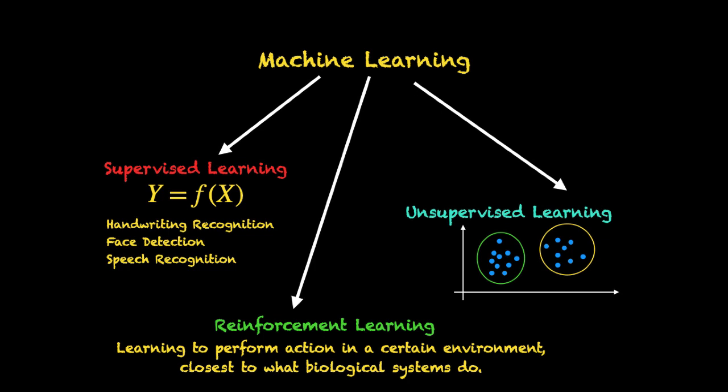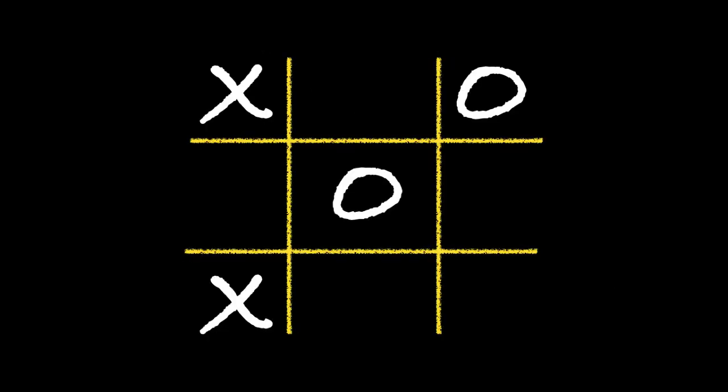Reinforcement learning follows a fixed algorithm like any other computer program — that is an important difference from biological systems — but it is closer to how biological systems evolve compared to supervised or unsupervised learning. Let's understand reinforcement learning through an example of tic-tac-toe. This game consists of nine places on a square board, and you need to populate these nine places with crosses or circles. It's a two-player game where one player chooses a cross and another chooses a circle, filling the board one by one.